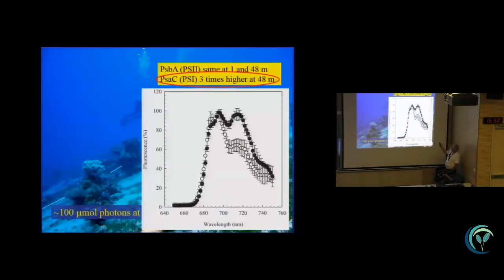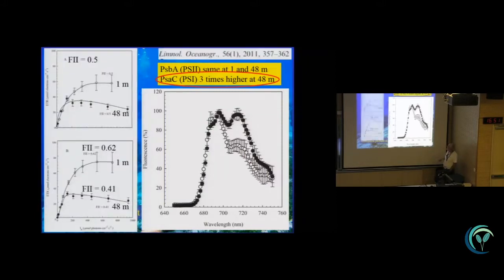What does change is the relation between photosystem 2 and photosystem 1. I won't go into detail here, but this graph tells us that photosystem 1 is three times higher at that depth than photosystem 2. And that means that this 0.5 factor will not be correct. There isn't an equal distribution of light absorption between photosystem 2 and photosystem 1. At 1 meter's depth, this factor is 0.62, and at 48 meter's depth, it's 0.41.